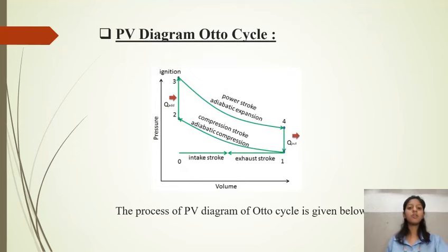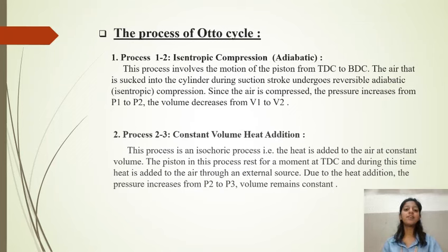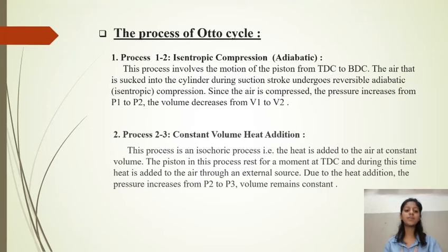This is the pressure-volume diagram of the Otto cycle. As seen in the PV diagram, process 1 to 2 is isentropic compression, meaning adiabatic. This process involves the motion of the piston from TDC to BDC. The air sucked into the cylinder during the suction stroke undergoes reversible adiabatic compression; as the air compresses, pressure increases from P1 to P2 and volume decreases from V1 to V2.